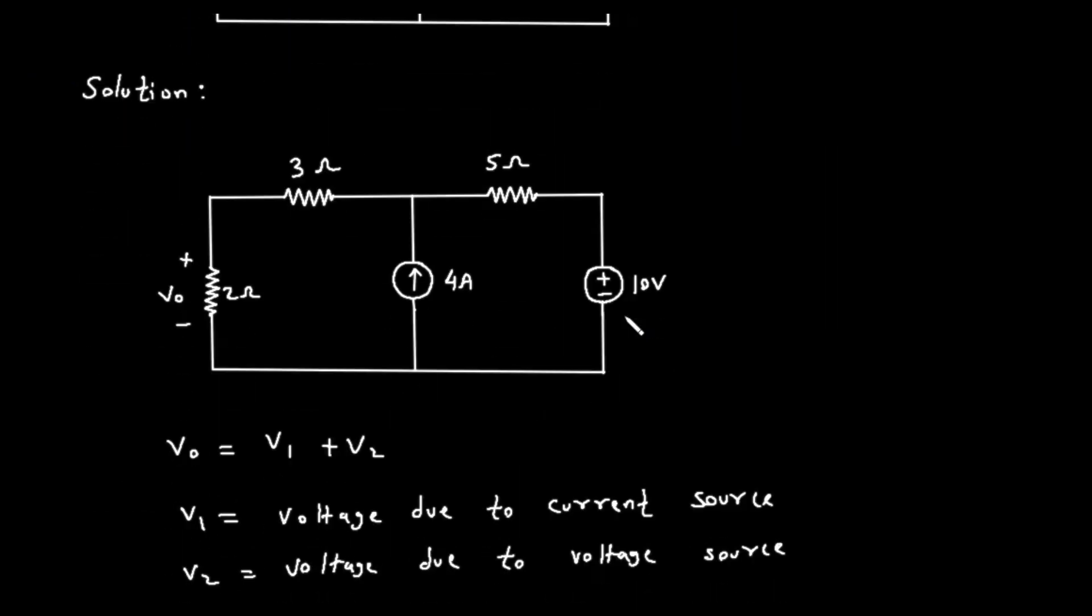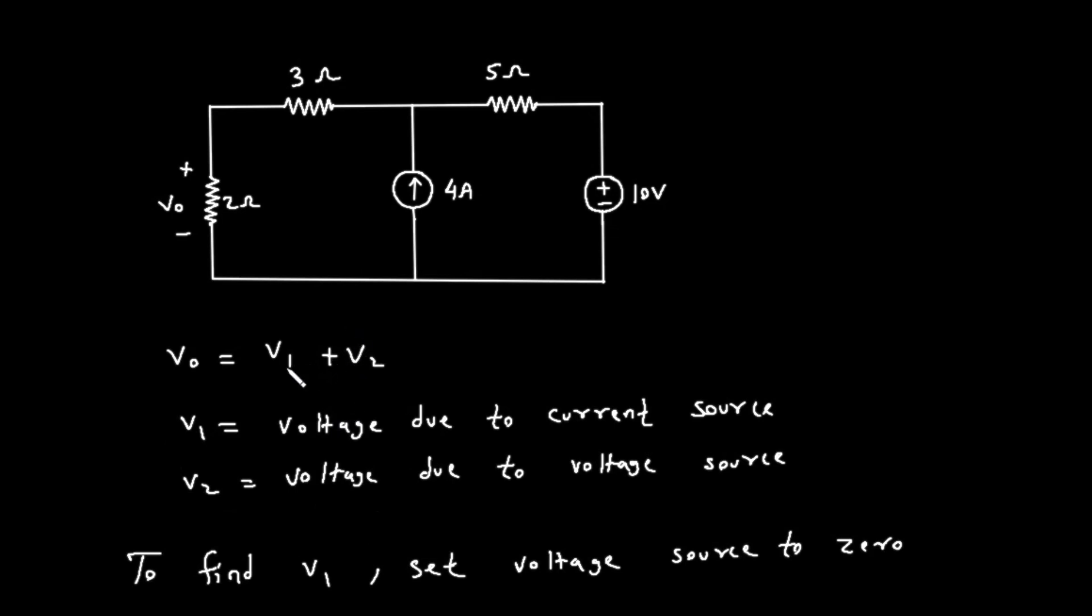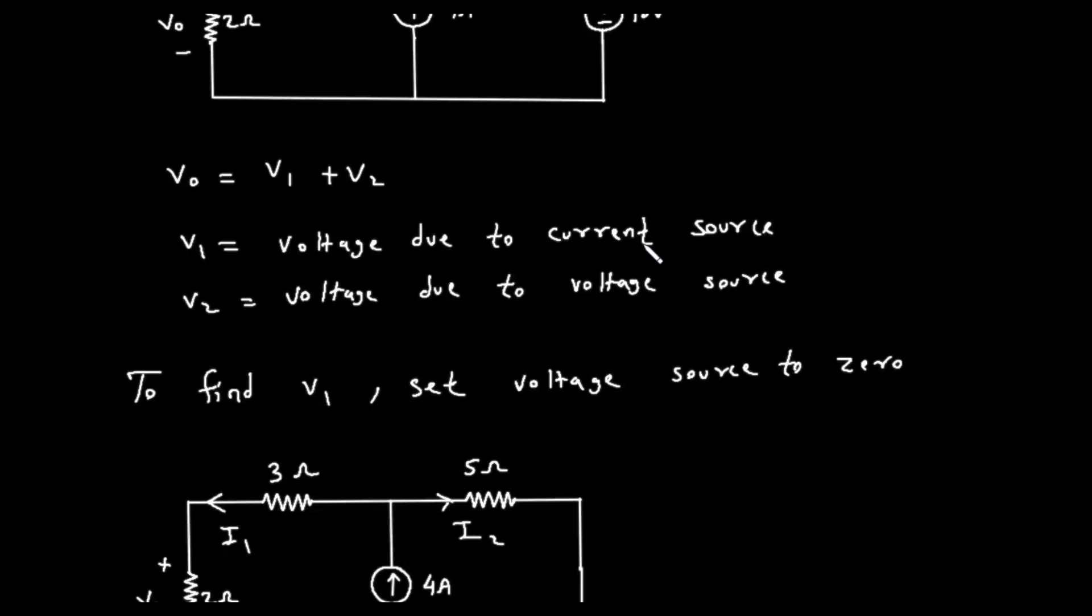Solution using the superposition theorem. The superposition theorem tells us that the total voltage VO is the sum of the voltages produced by each independent source acting one at a time. So, we can write the equation VO equals V1 plus V2. Here, V1 is the voltage across the 2 ohm resistor due to the 4 ampere current source only, and V2 is the voltage across the 2 ohm resistor due to the 10 volt voltage source only. Let's find each of these voltages one by one.